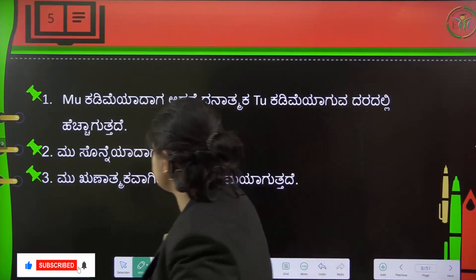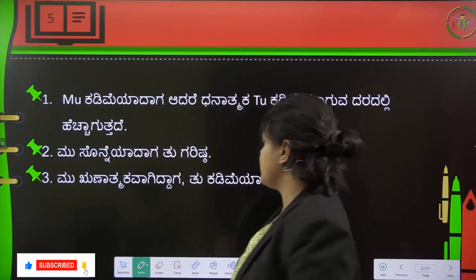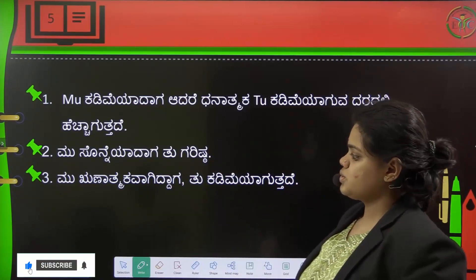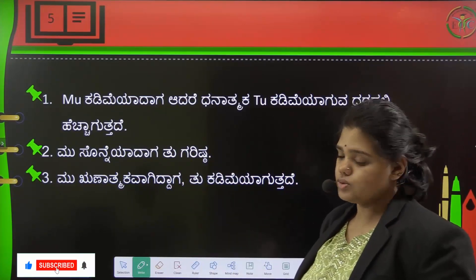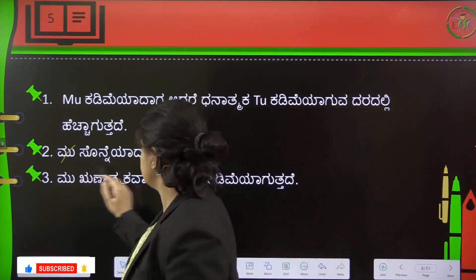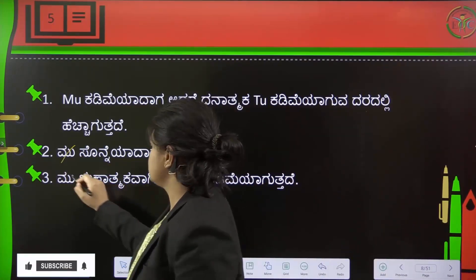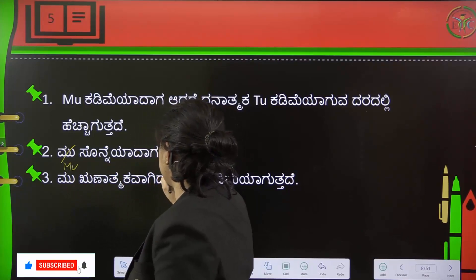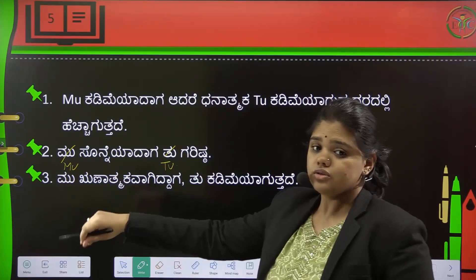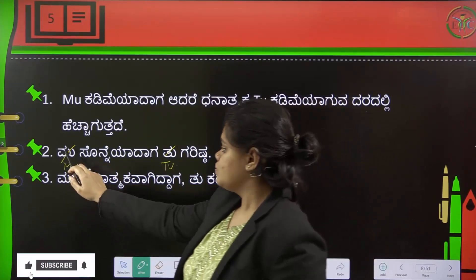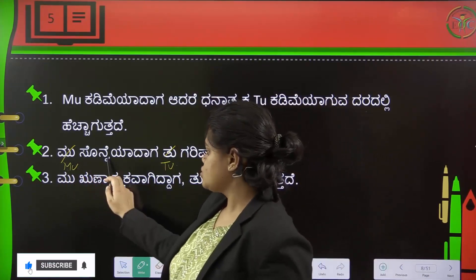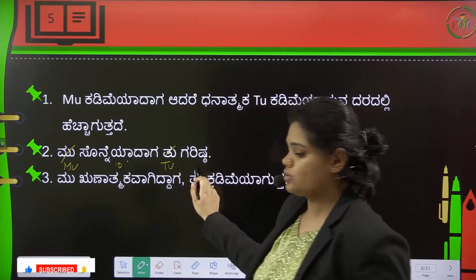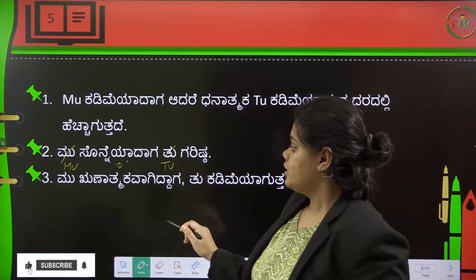When marginal utility (MU) becomes zero, total utility (TU) is at its maximum. When MU equals zero, TU is at its highest point. That is the key relationship between MU and TU.